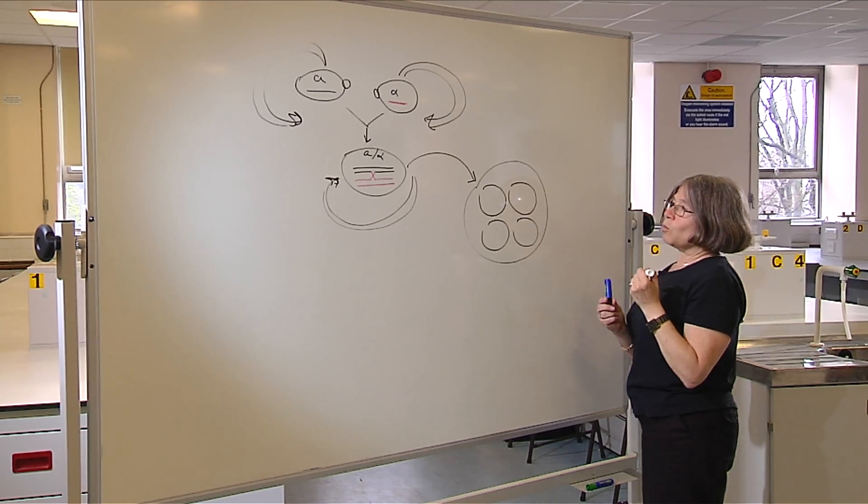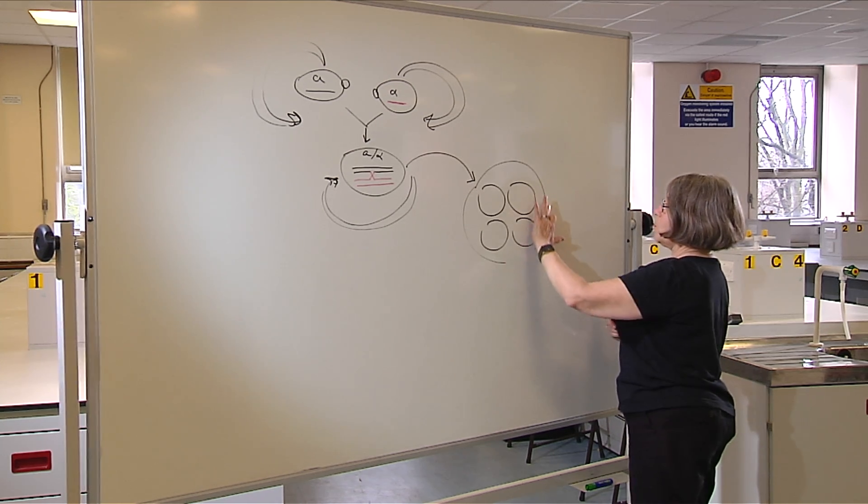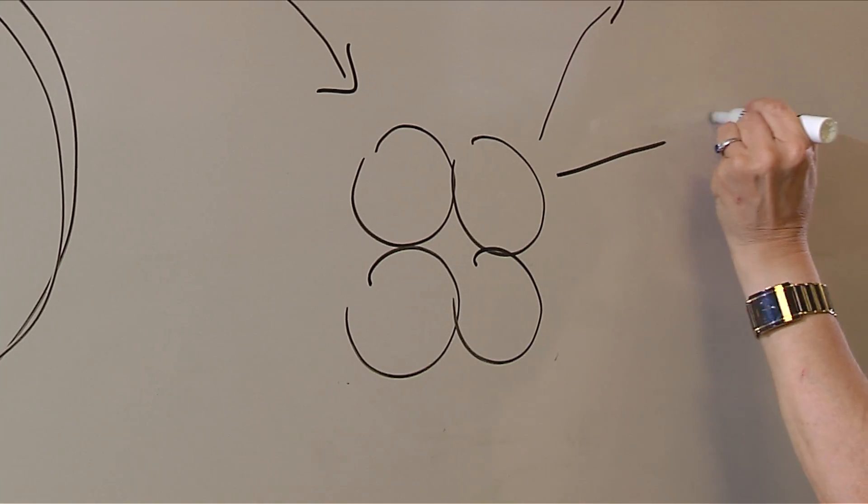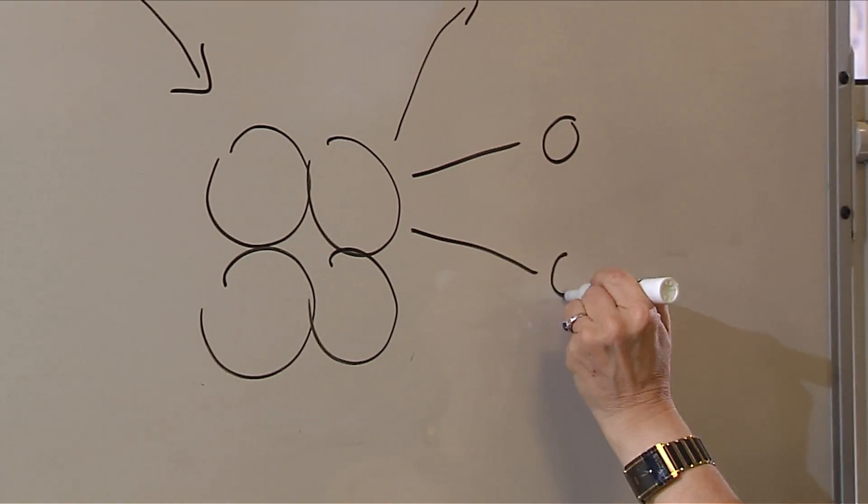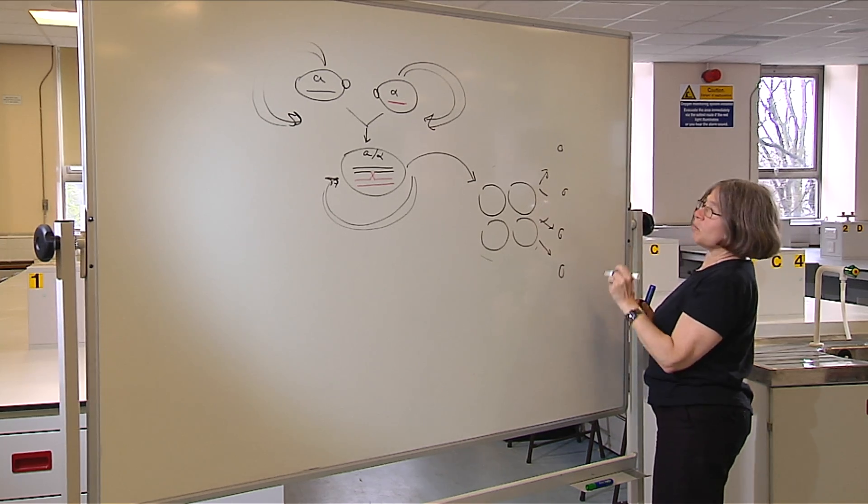We can study these four spores first by taking away the ascus. Under a microscope, we can separate these four spores into four different places on a nutrient plate. And then these can be grown up and studied.